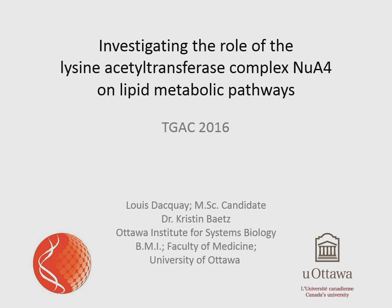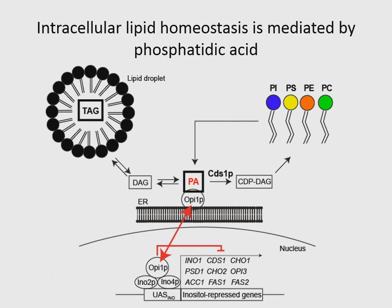Lipids within the cells can rapidly remodel in favor of producing phospholipids when they want to create more membranes and are actively proliferating, or when under stress they want to create neutral or inactive lipids — they'll tend to convert them into triacylglycerol or steryl esters and store them in lipid droplets. All these pathways are mediated through phosphatidic acid, which is produced at the ER, and it acts not only as a metabolic intermediate to neutral lipids and phospholipids, but also has signaling functions.